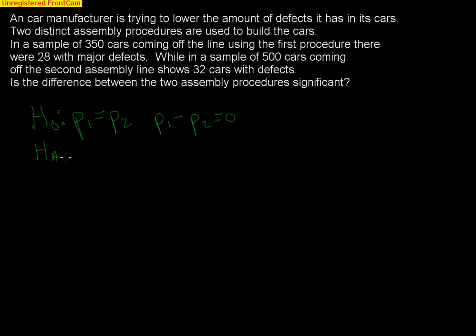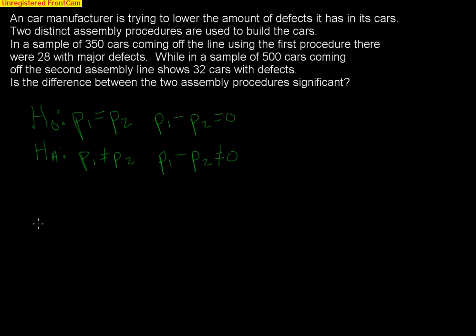The alternative hypothesis is simply that there is a difference. We're not going to claim that one is better than the other — the problem gave no indication of that. We're just going to say there is a difference, or that proportion one minus proportion two does not equal zero. This makes it a two-tail test.